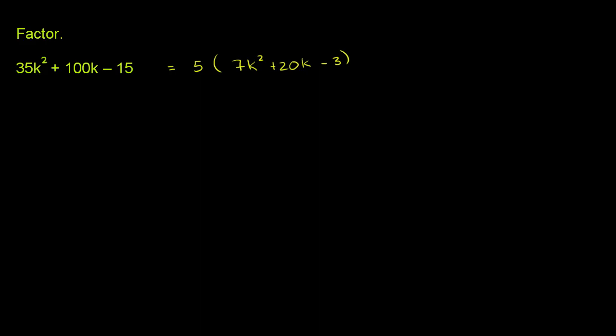So let's figure out two numbers that if I were to take the product, I get 7 times negative 3, which is equal to negative 21. And if I were to take their sum, it needs to be equal to 20.